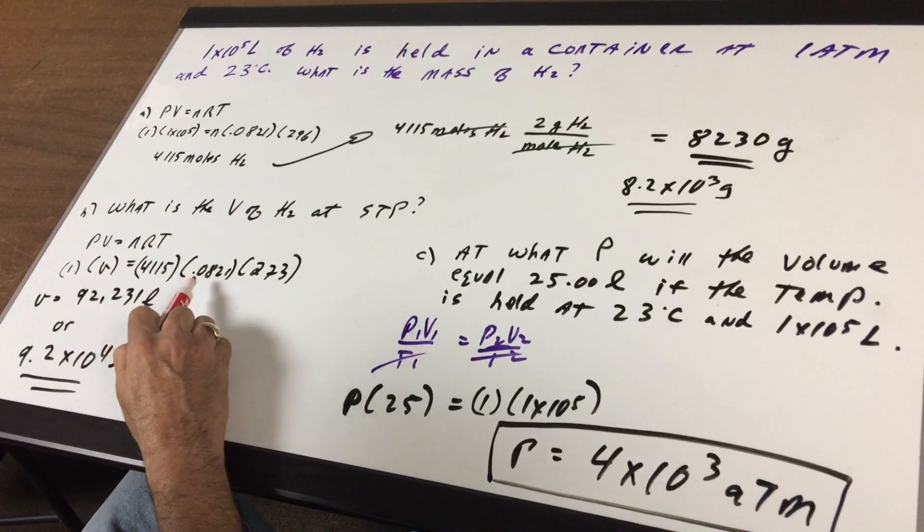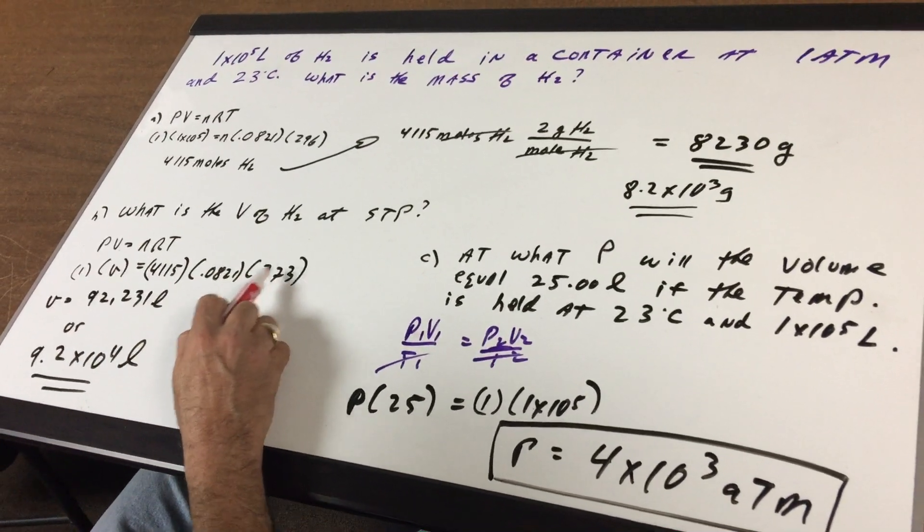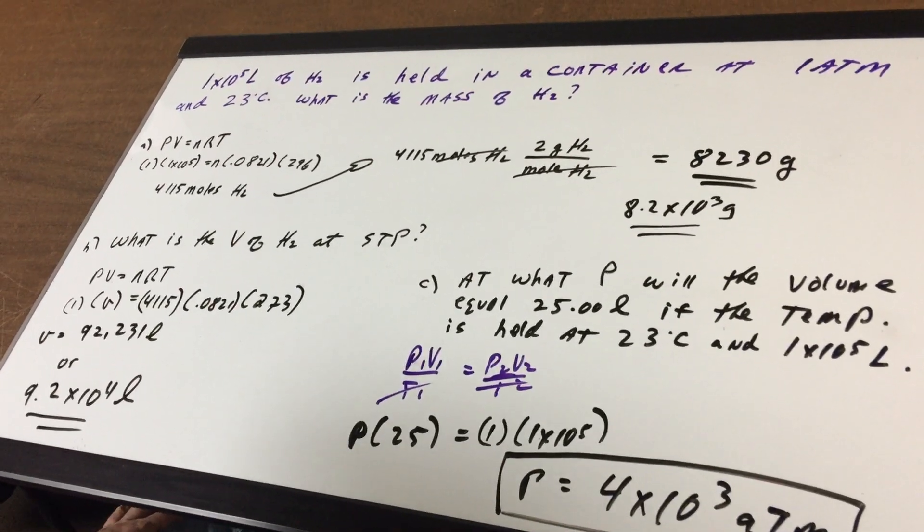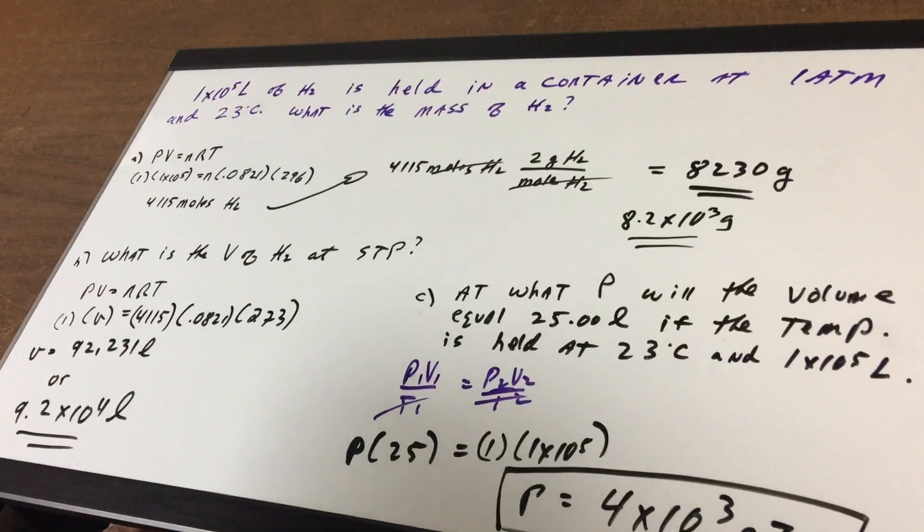There's the R. There's the 273. And that gives me 92,231 liters or 9.2 to the fourth liters.